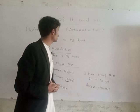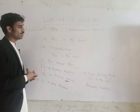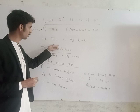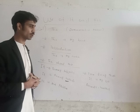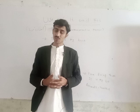First of all, we try to know 'this'. This is how we demonstrate in English. For example: this is my book, this is my table, this is my room, this is a book.